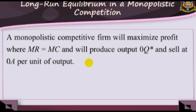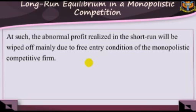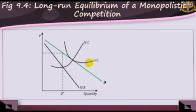Long-run equilibrium in monopolistic competition. A monopolistic competitive firm will maximize profit where MR equals MC, and will produce output OQ* and sell at OA per unit of output. In the short run, abnormal profit is possible, represented by rectangles in Figure 9.4. In the long run, this market exhibits a feature similar to that of a perfectly competitive firm — the abnormal profit realized in the short run will be wiped off, mainly due to the free entry conditions of monopolistic competitive firms.